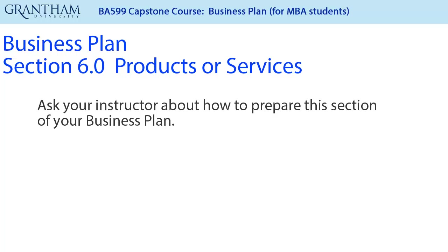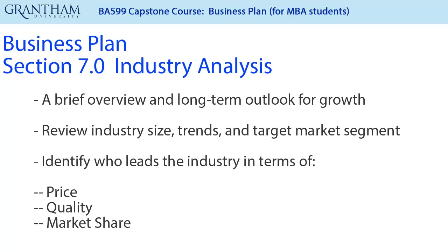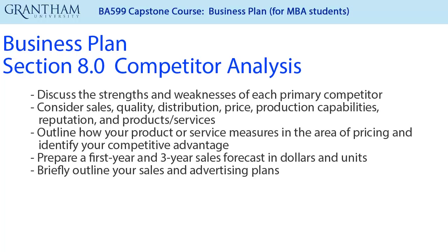Ask your instructor about how to complete the products or services section of your business plan. Develop the industry analysis by providing a brief overview and long-term outlook for growth. Review industry size, trends, and target market segments, and identify who leads the industry in terms of price, quality, and market share. In your competitive analysis, discuss the strengths and weaknesses of each primary competitor, considering sales, quality, distribution, price, production capabilities, reputation, and products and services. Outline how your product or service measures in the area of pricing and identify your competitive advantage.